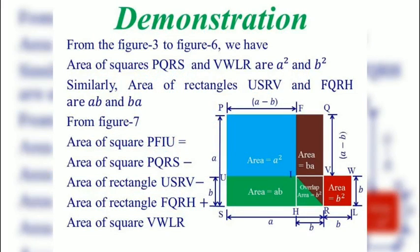From figure 7 we observe that the area of square PQRS is A square and area of square VWLR is B square square units. From figure 7 we observe that area of square PFIU is equal to area of square PQRS minus area of rectangle USRV minus area of rectangle FQRS plus area of square VWLR.